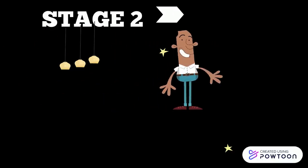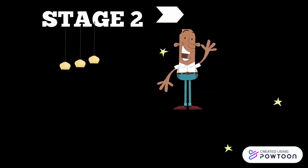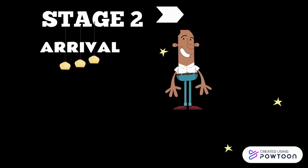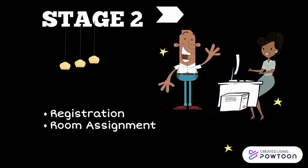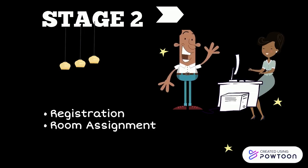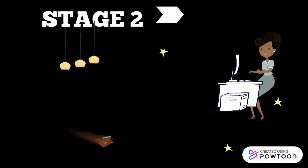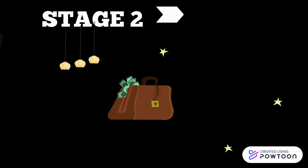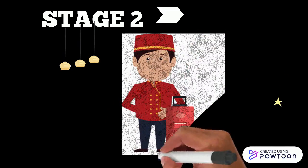When the guest arrives and checks in, this signals the arrival stage. This stage includes registration and the process of room assignment. During this stage, the guest establishes the business relationship with the hotel. The guest is then escorted to their room.